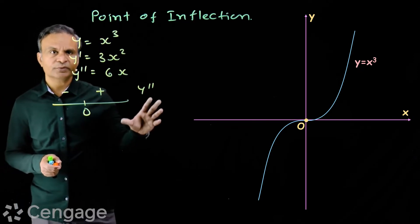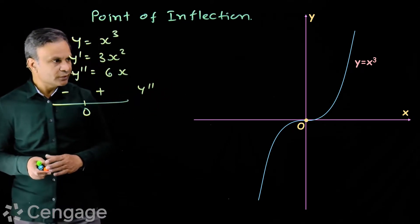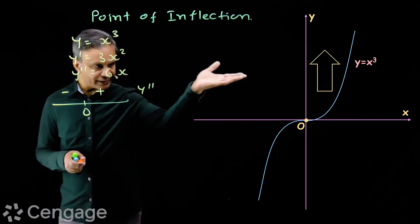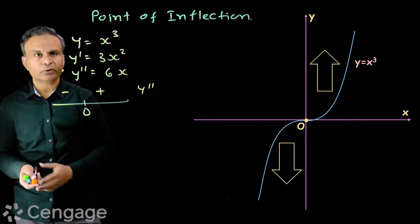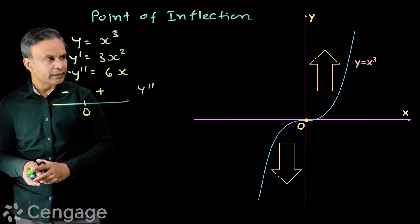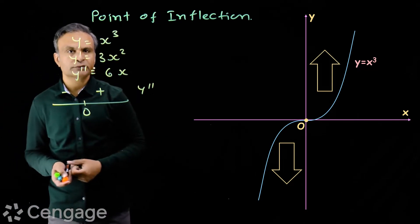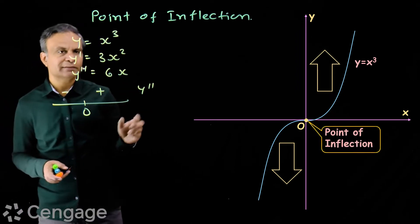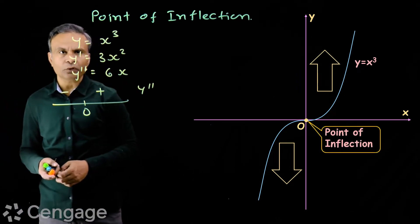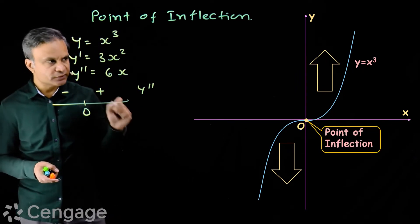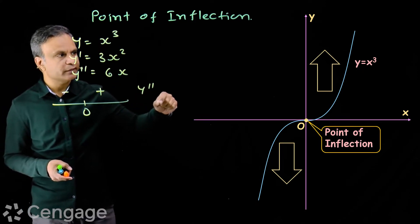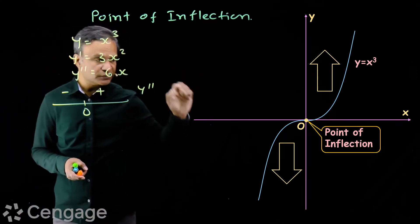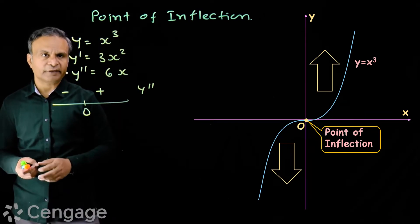Analyzing from the second derivative point of view: for x > 0 the curve is concave upward, for x < 0 it is concave downward, and at x = 0 the second derivative is 0. Since the sign of the second derivative is changing at 0, here x = 0 is a point of inflection.